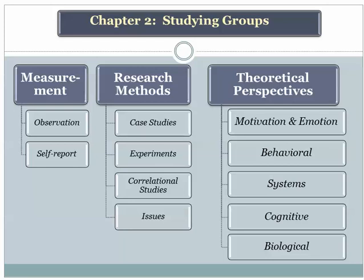In almost every case, a theory that's been developed will probably have aspects of one or more of these theoretical perspectives. Although we might be tempted to say that a particular theory is purely behavioral or purely biological, in most cases they're going to have elements of at least two perspectives. But with that caveat in mind, let's go through the five identified here, recognizing there are other theoretical perspectives we could mention as well.